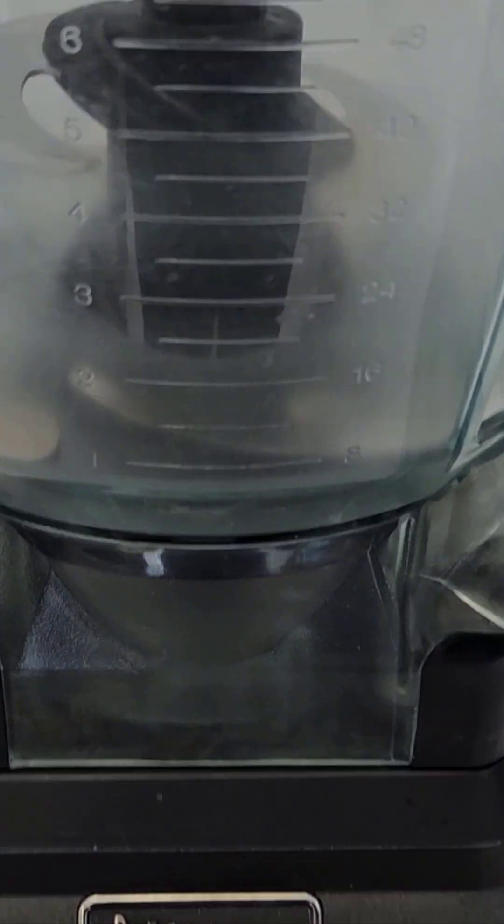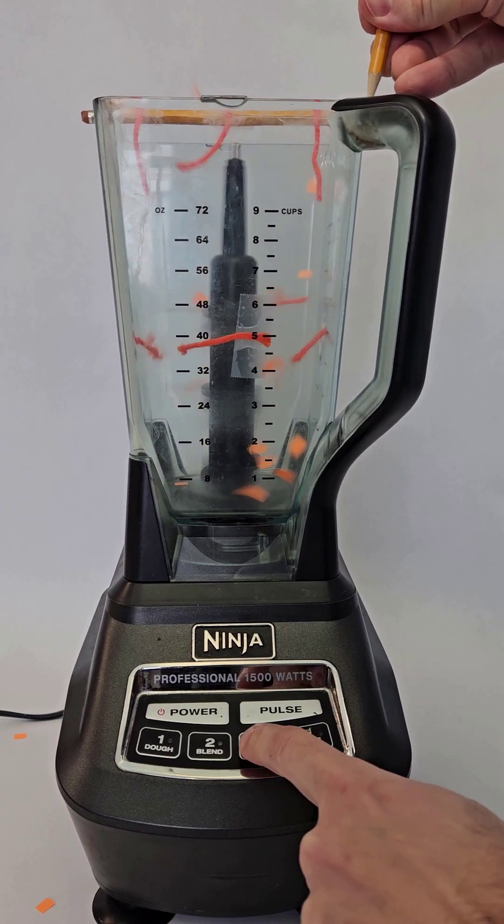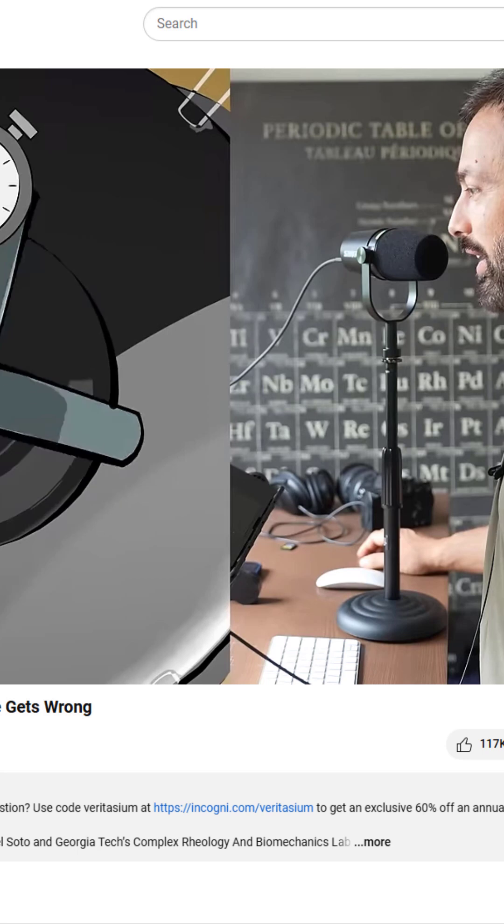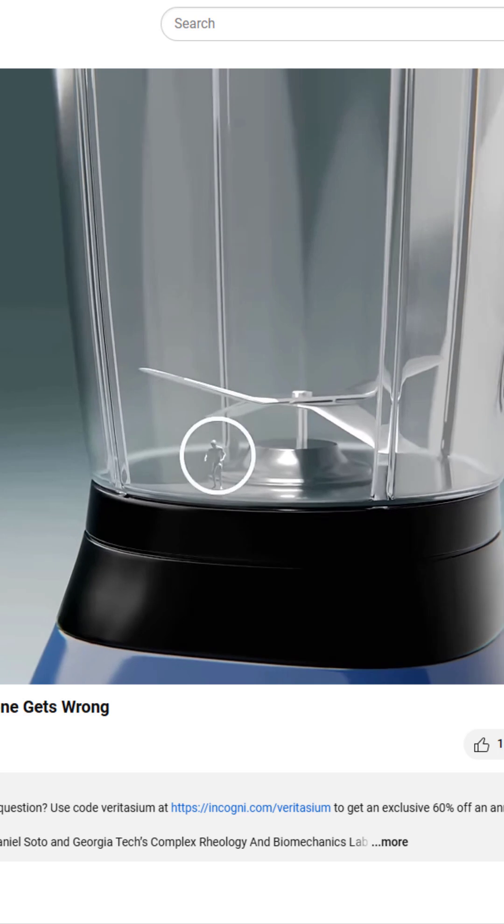What would you do if you were shrunk down to the size of a nickel and stuck at the bottom of a blender with 60 seconds until the blade starts spinning? Veritasium just did a video on this famous Google interview question that focused mostly on the possibility of climbing or jumping out.